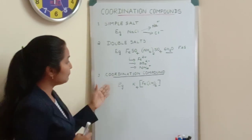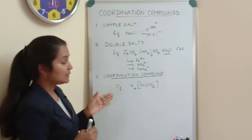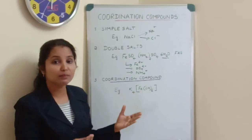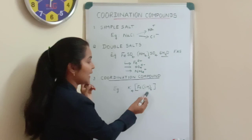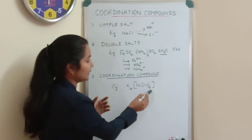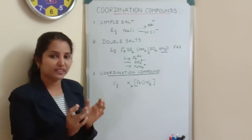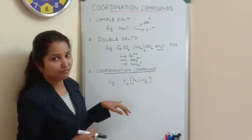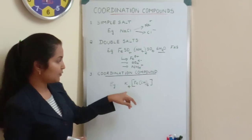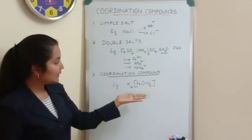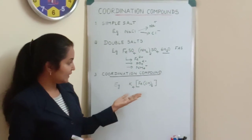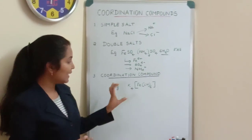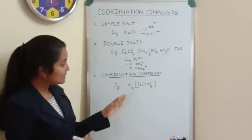When coming to coordination compounds, a coordination compound is a complex compound in which a metal ion is surrounded by neutral molecules or ions. The example taken here is potassium ferrocyanide, K₄[Fe(CN)₆]. By looking at this chemical formula, some part is kept in a square bracket and one part is outside the square bracket — this is a coordination compound.